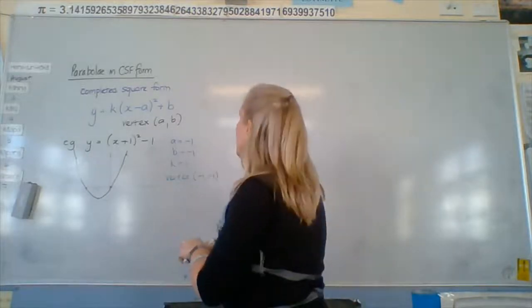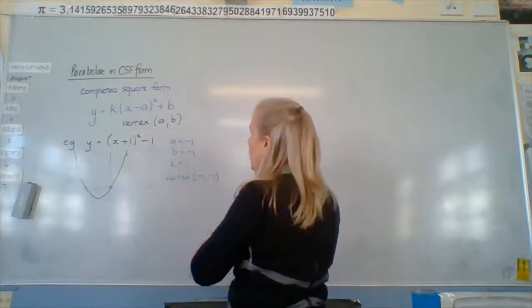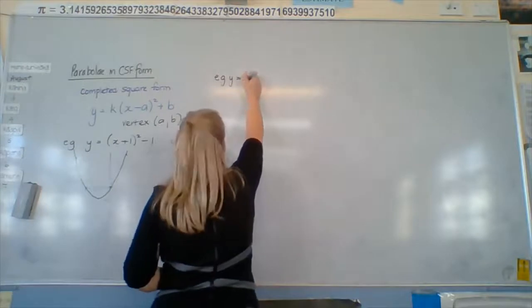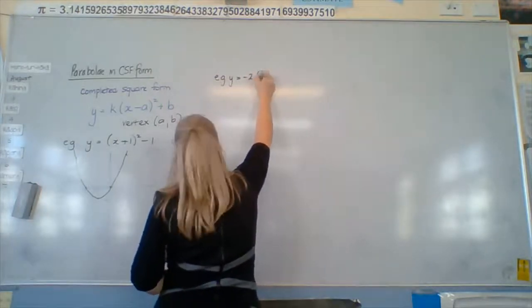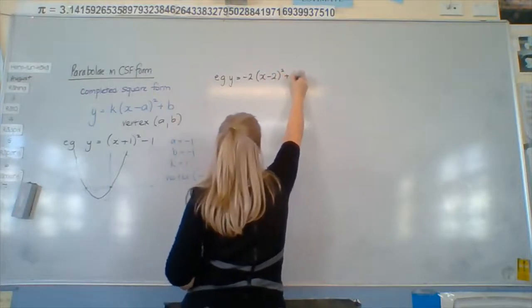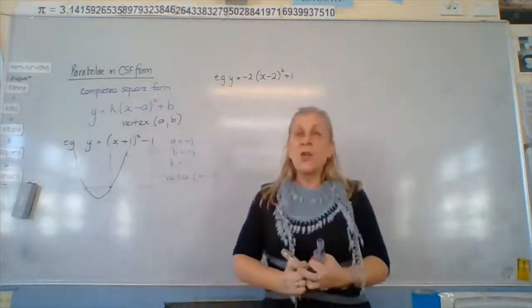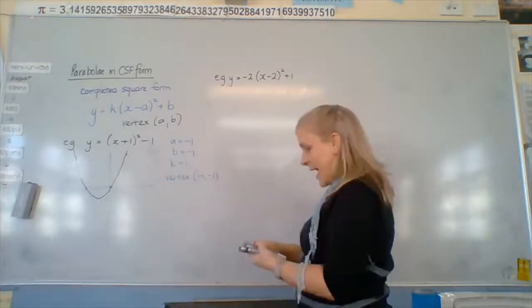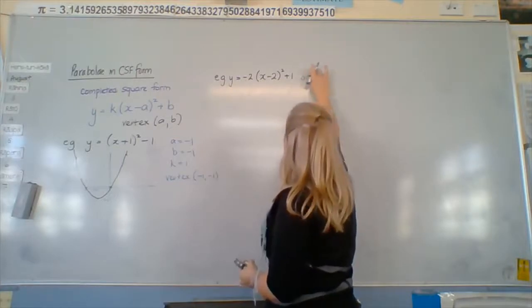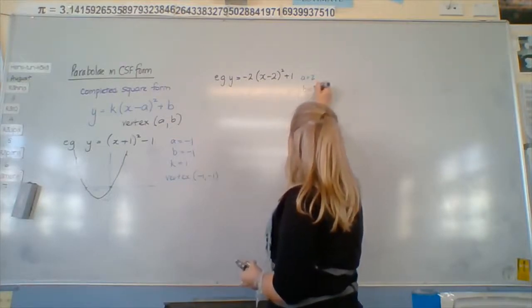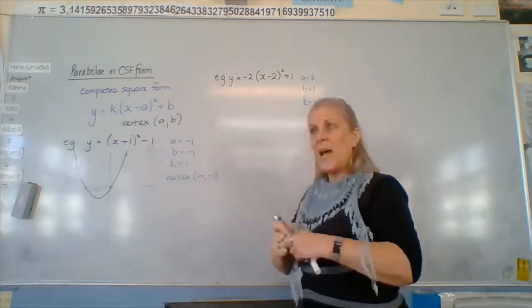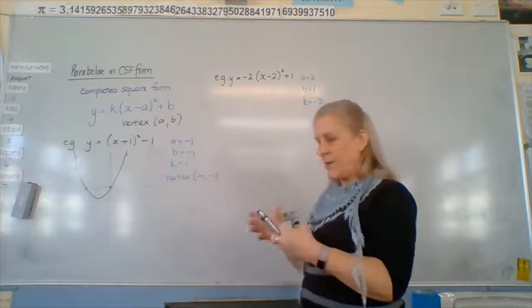Okay, so then let's move on and look at a case where we've got a k. So e.g. y equals negative 2(x minus 2) squared plus 1. So we're still going to go through those same things. What's a? 2. Good. What's b? 1. What is k? Negative 2. What does the negative do? Upside down. Good. So all of those things together, we're ready to go.